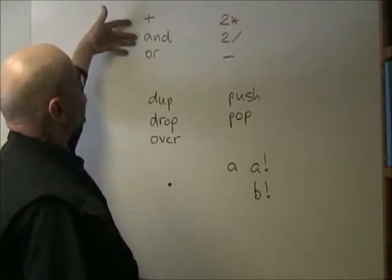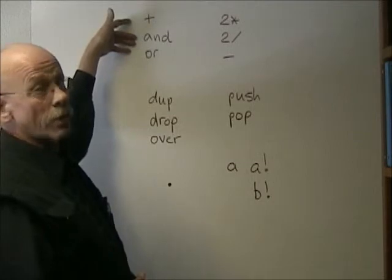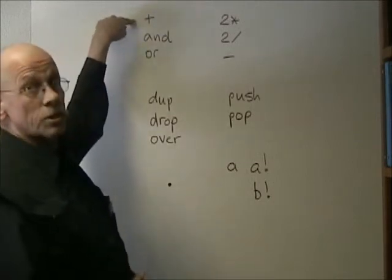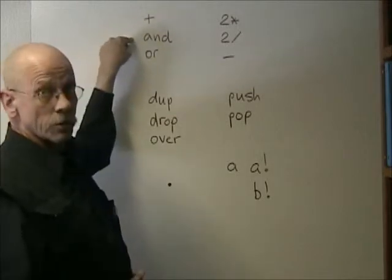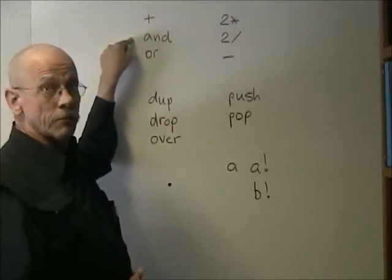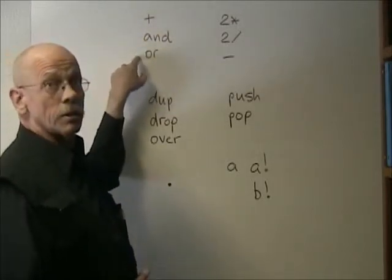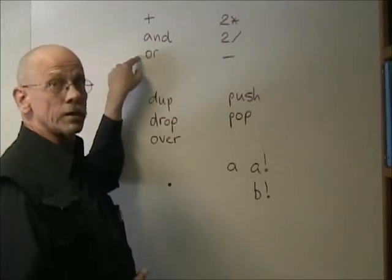We have three binary operators. Plus, which is a plain old 18-bit 2's complement add. And, which is a logical bitwise and. And or, which is an exclusive bitwise or operator.